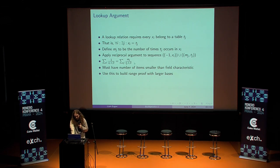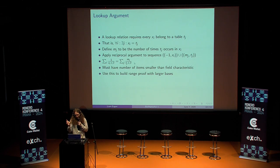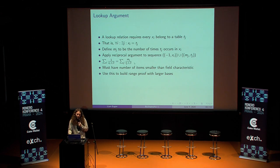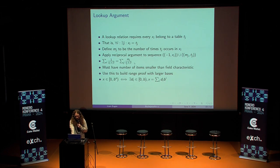We use lookup to build range proofs with larger bases — specifically, a 64-bit range proof with 16 base-16 digits. This reduces the size of the witness by a factor of four and reduces verification complexity by a factor of four. Concretely, the size of a 64-bit range proof with Bulletproofs++ is 318 bytes, which is almost as small as Groth16 but not quite, and it's about 40% smaller than a Bulletproof. The basic form of making a range proof: you take your x, split it into digits, check each digit is valid, and then check that x sums up to your digits.